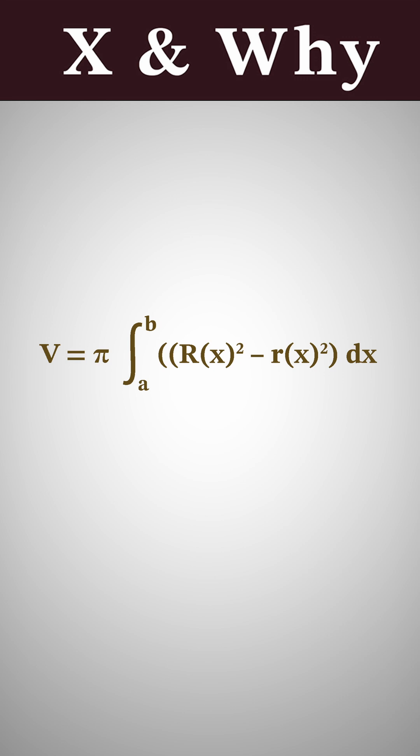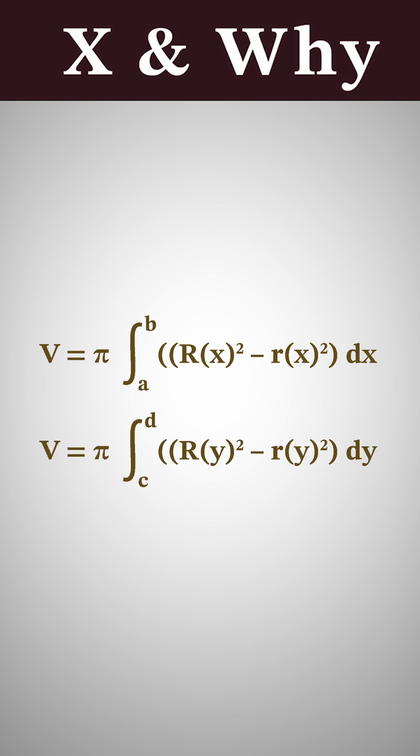For a function with a vertical axis of revolution, the formula is: volume equals pi times the integral from c to d of the outer radius of y squared minus the inner radius of y squared, dy.